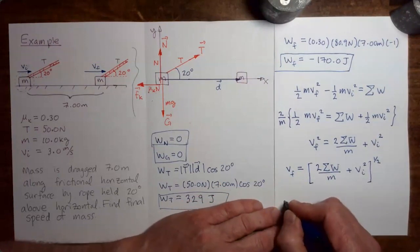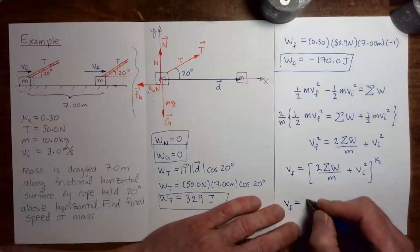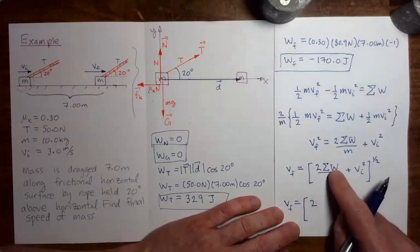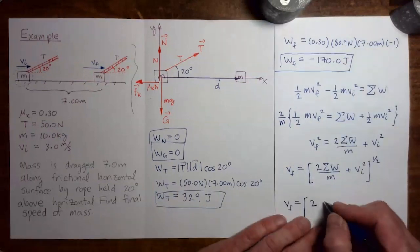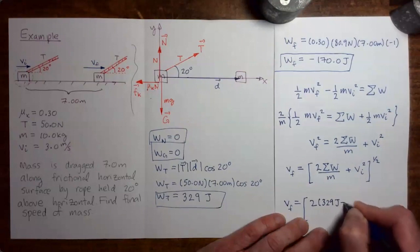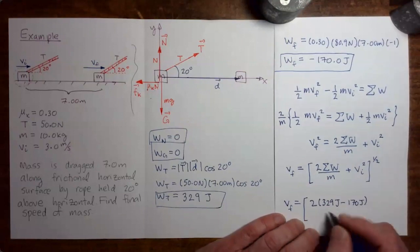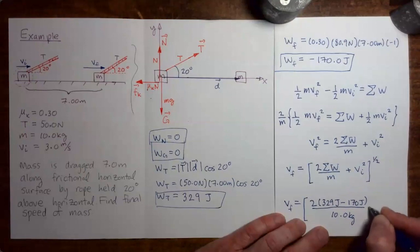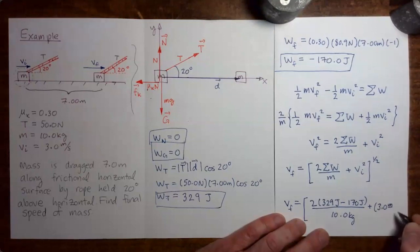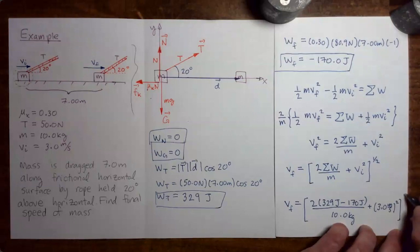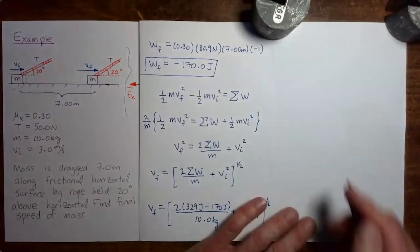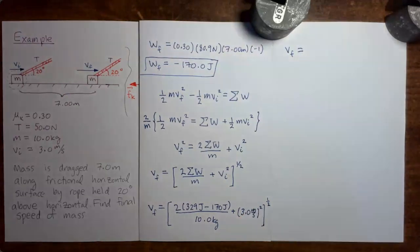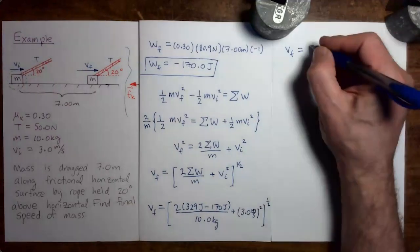Now I can do my substitution. V_final equals the square root of: 2 times the total work done by all forces — that's 329 joules minus 170 joules — all divided by the mass of 10 kilograms, plus V_initial squared, which is 3 meters per second squared. When you put all of this into your calculator, it will give you 6.4 as the numerical value.